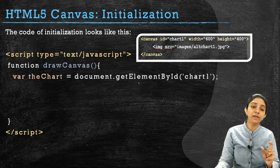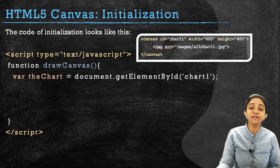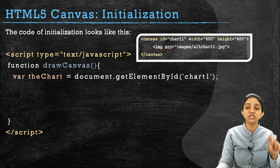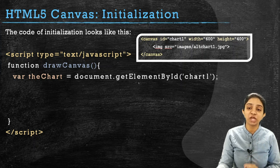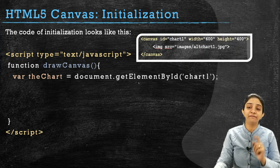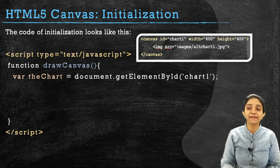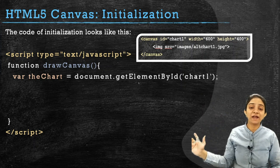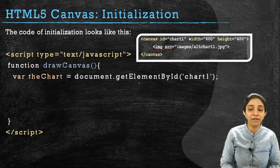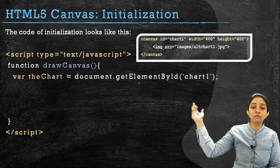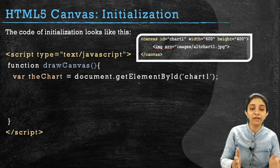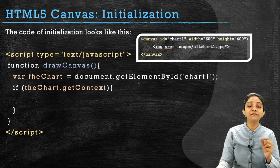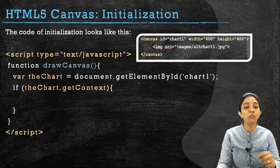Instead of 'theChart', you can use any valid variable name. It is initialized as document.getElementById('chart1'). What is 'chart1'? Chart1 is the id of the canvas tag. Remember, while declaring the canvas tag, the id of that canvas is given as 'chart1'. That same id is now passed as an argument to the getElementById function. So the complete canvas object will now be referenced by the 'theChart' variable. Now, we will check whether the getContext method for 'theChart' works or not.